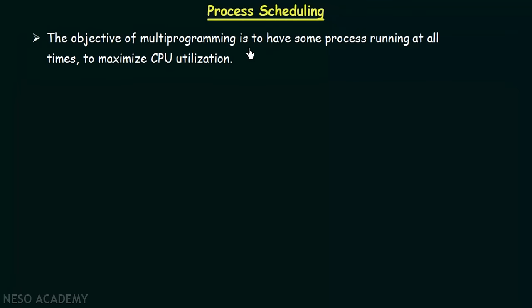The objective of multiprogramming is to have some process running at all times to maximize CPU utilization. We have already talked about multiprogramming in the beginning of this lecture series. If we are using only 20% or 30% of the CPU, we are not making complete utilization of the CPU and hence we are wasting our resources. The objective of multiprogramming is to have at least some process running at all times so as to maximize the utilization of our CPU, and hence we can efficiently use the resources that we have.